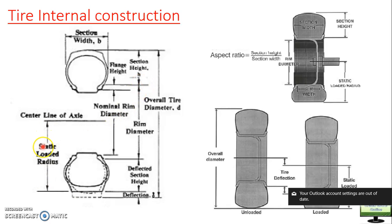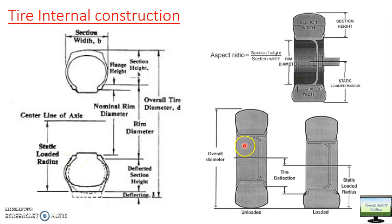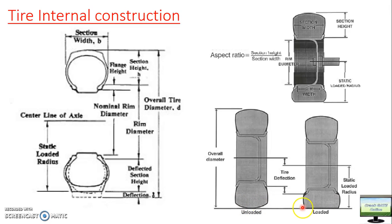This radius is called the static loaded radius. 'Loaded radius' means: take an unloaded tire — there is a point contact with the ground and this is the overall diameter of the tire. If you put some load then there will be some deflection in the tire and this whole area will touch the ground, giving line or area contact. Due to this deflection the tire diameter reduces, so static loaded radius will be less than the unloaded radius — the difference is due to tire deflection.